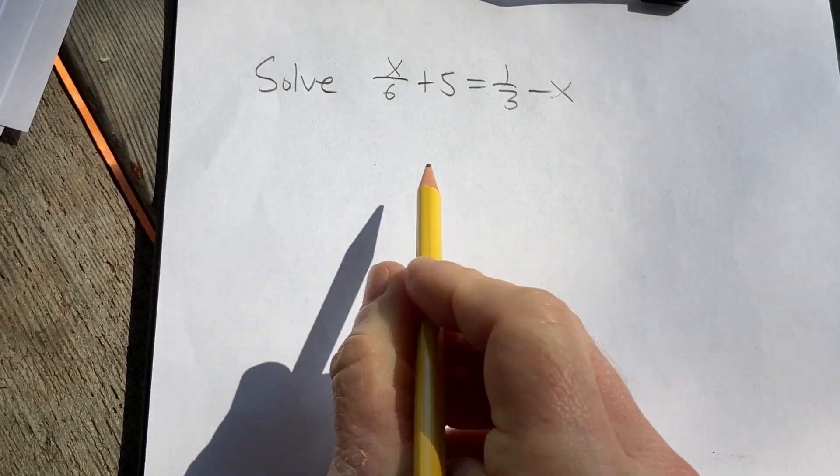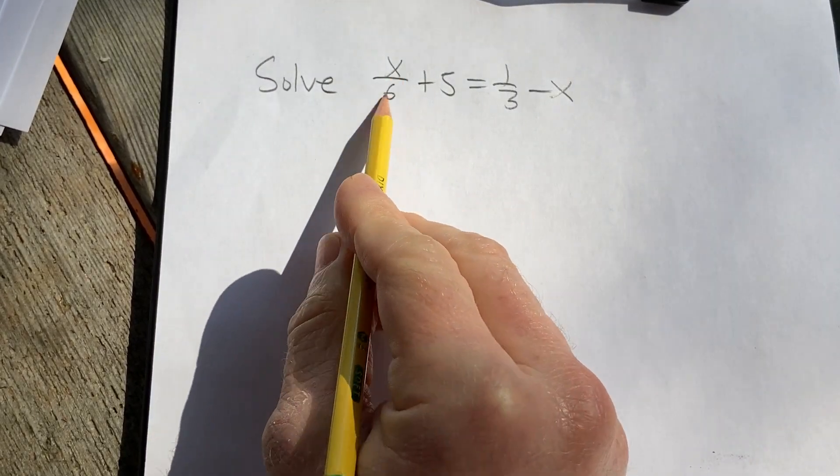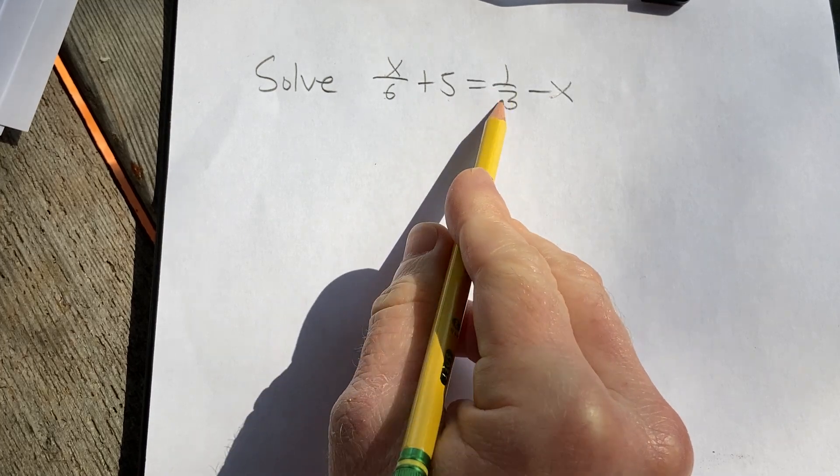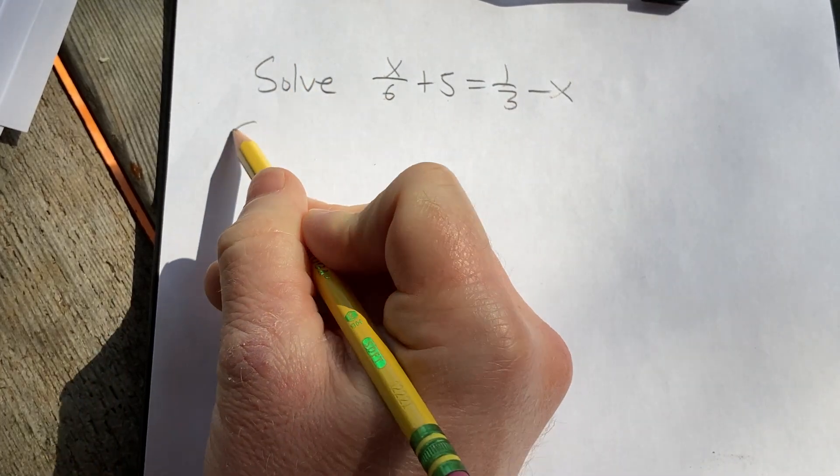Hello, in this video we're going to solve this equation with fractions. We have x over 6 plus 5 equals 1 over 3 minus x. Let's go ahead and work through a solution.